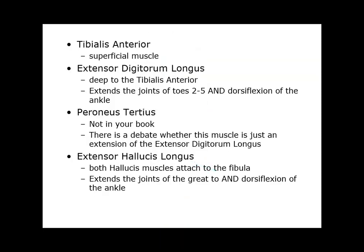The tibialis anterior is a superficial muscle. Extensor digitorum longus is deep to the tibialis anterior — it extends toes two to five and helps with dorsiflexion. Peroneus tertius is a small muscle; there's debate whether it's just an extension of the extensor digitorum longus, so it's not a huge torque producer. Then we have the extensor hallucis longus, which attaches from the fibula and extends the great toe and is a dorsiflexor.